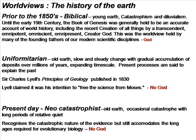Following the publication of Charles Lyell's Principles of Geology in 1830, the uniformitarian view of the Earth's history began to predominate — this is slow and steady change over ever-increasing timescales. Lyell's stated purpose was to free the science from Moses, which tells us that he was not looking at the evidence to see where it led, but had a no-god agenda.